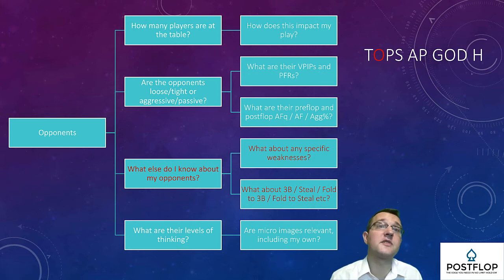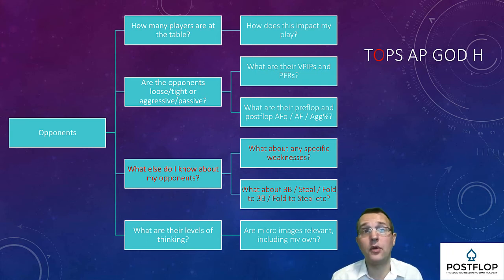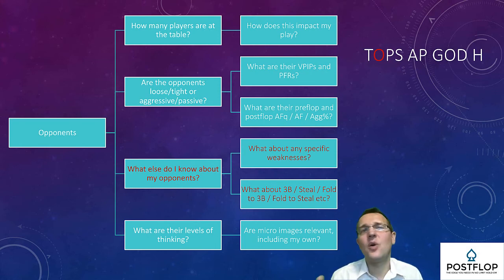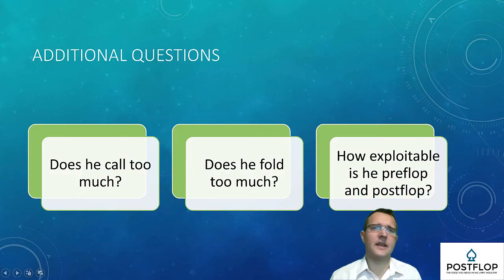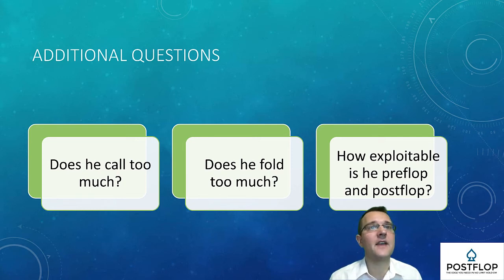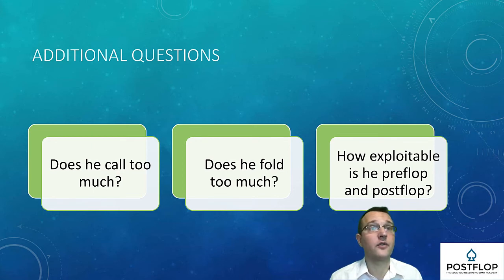If you have time, consider specific opponent weaknesses or anything else of relevance: is someone tilting, is someone in a bad mood, does someone fold to three-bets too often, has the tight player played one hand in the last 50? Now's your chance to make specific observations that might help you in the next hand. Some questions in the questioning drills may not appeal to you — there's flexibility to add questions of your own or change things around. Definitely translate them if English is not your first language. If you know an opponent does a lot of calling or folding, it can really help you exploit their weaknesses.